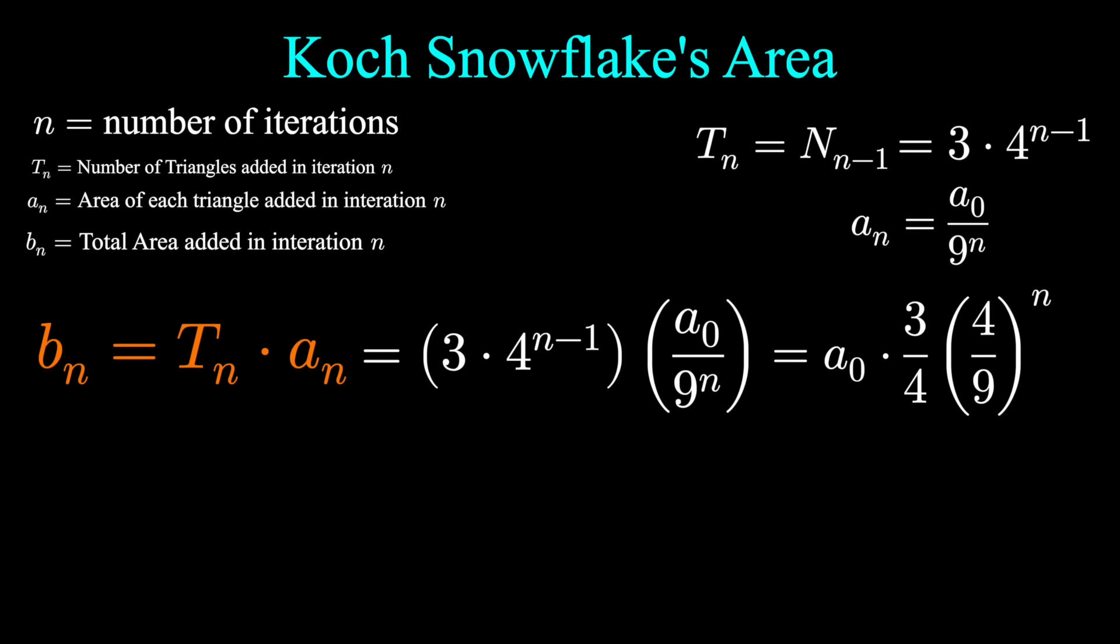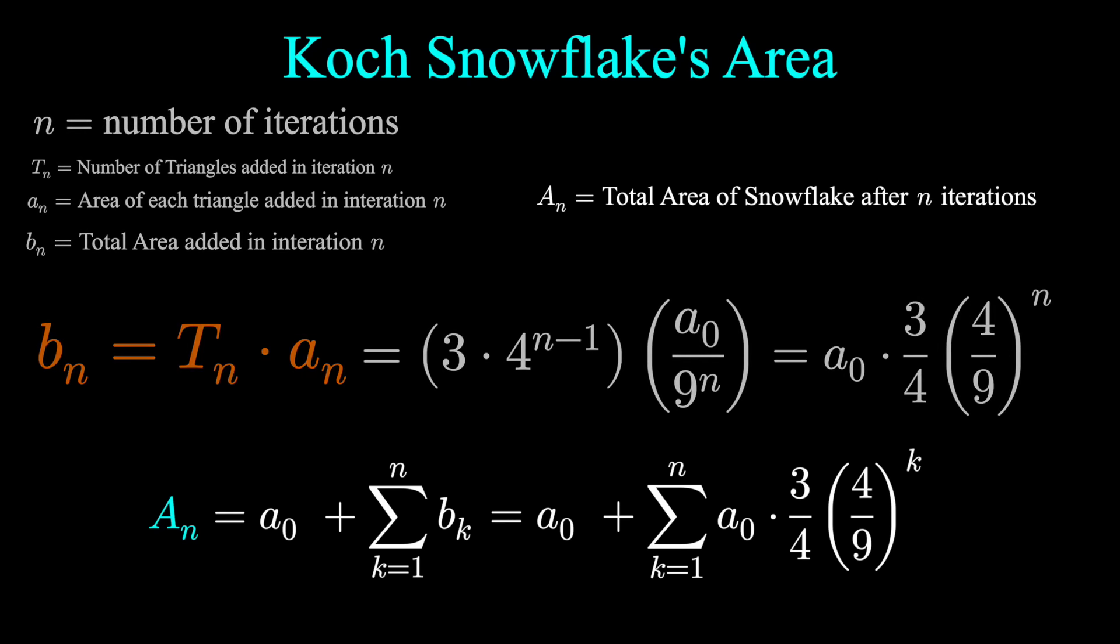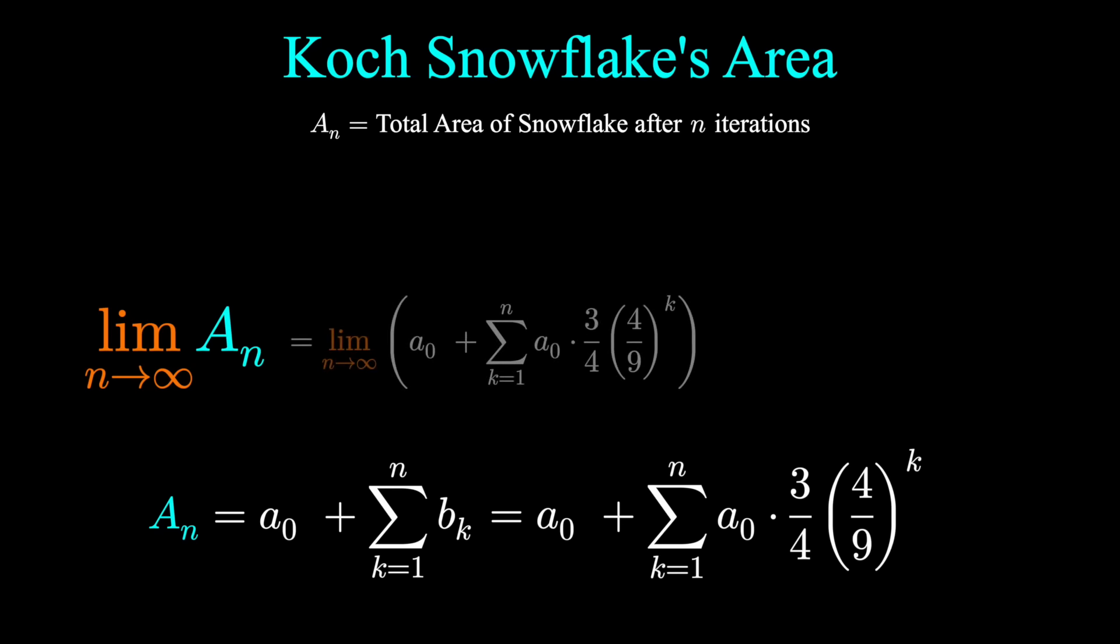We're interested in the total area of the snowflake altogether. So we have to sum this iteration for every value of n. Let's let capital A sub n be the total area of the snowflake after n iterations. That's A0, the original area of the triangle, plus the sum of B sub n. This is a fairly funky formula, but what's great is that we can still use it to find the limit as n goes to infinity. If we were to perform an infinite number of iterations, what would the area of this object approach?